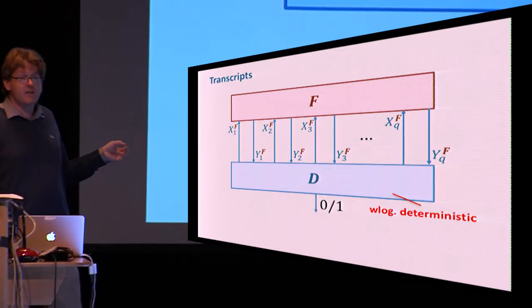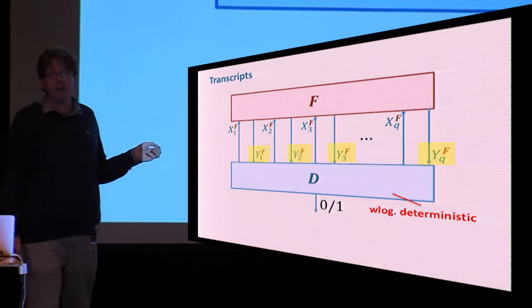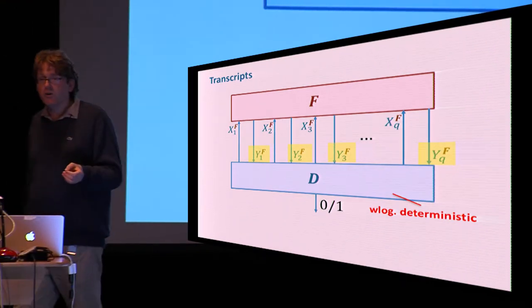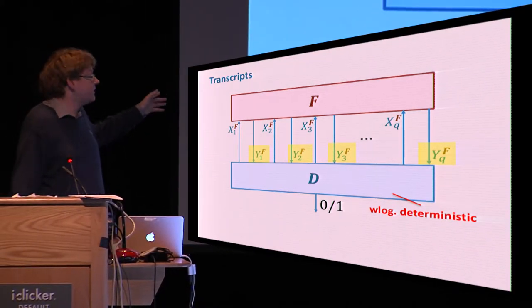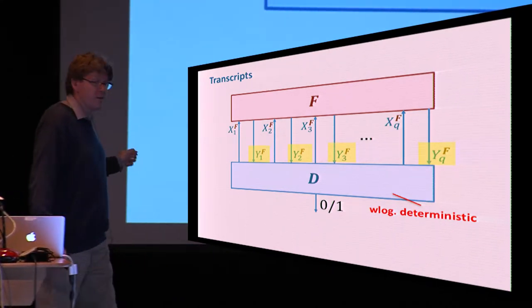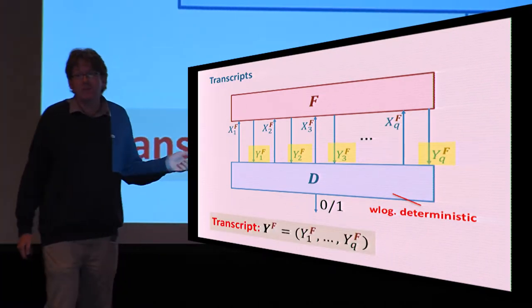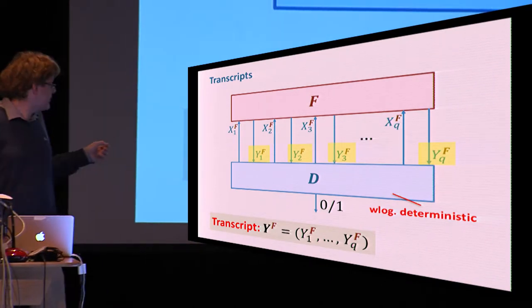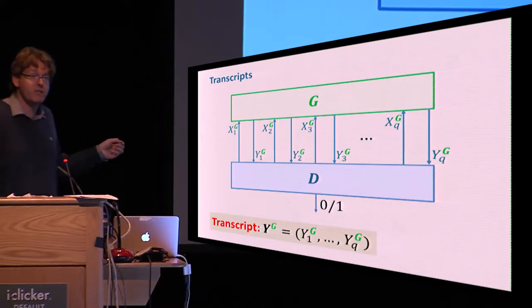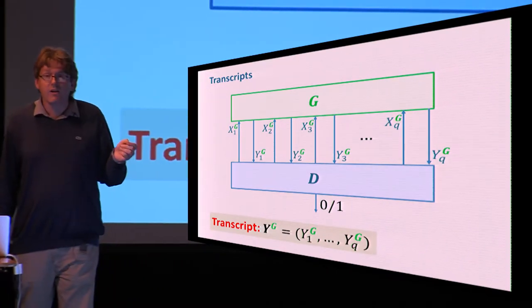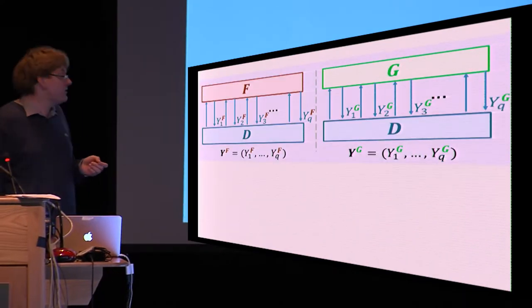A neat thing is that for information theoretic analysis, we can usually assume that the distinguisher is, without loss of generality, deterministic, meaning it doesn't make any random choices. This allows us to describe the interaction uniquely by just looking at the answers of the queries. If the distinguisher is deterministic, you can reconstruct the queries themselves uniquely from their answers. I'm going to denote the sequence of outputs obtained from the system by the distinguisher d as the transcript y^f. You can do the same for the system g and obtain a corresponding transcript as y^g.